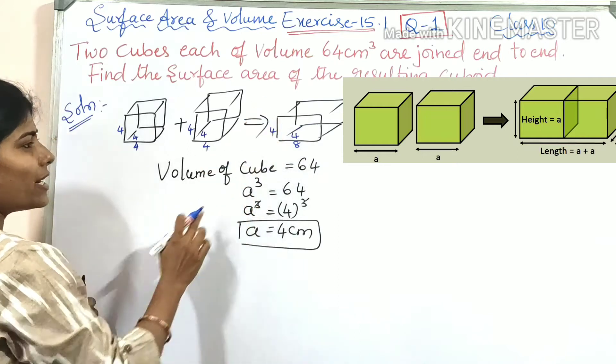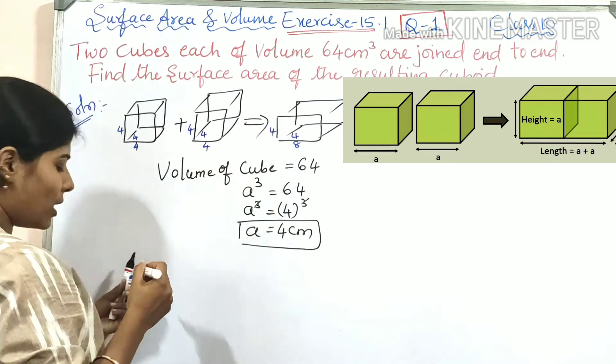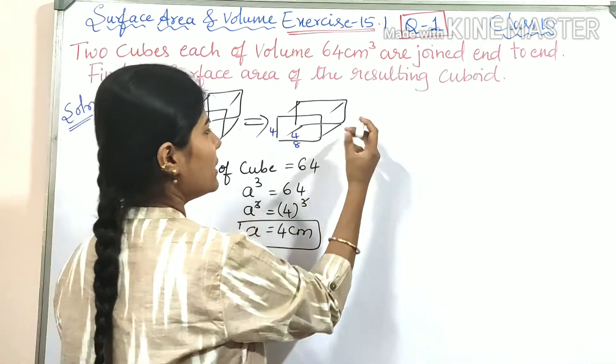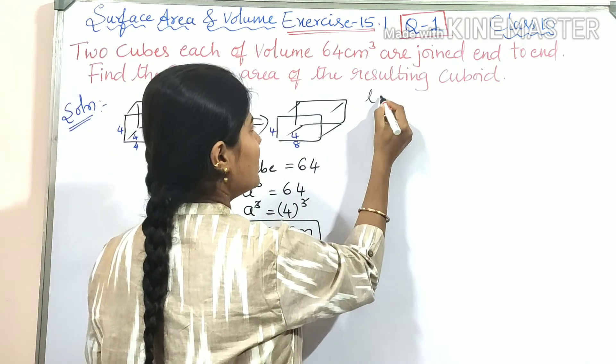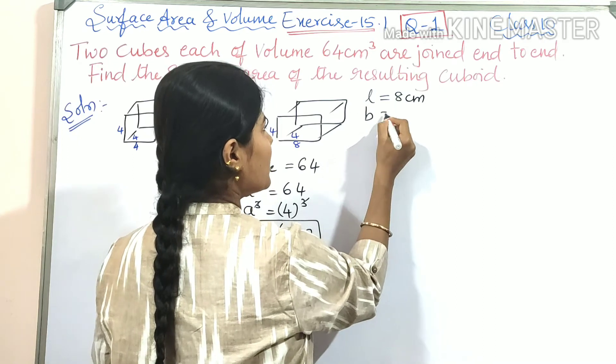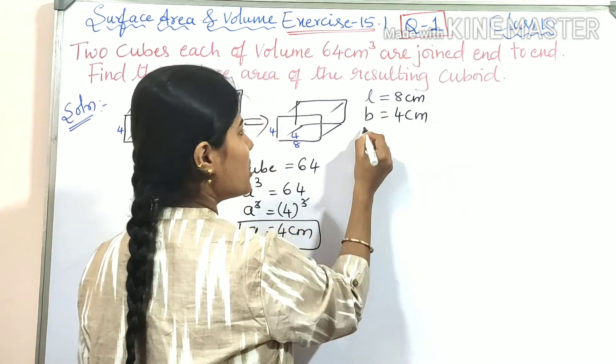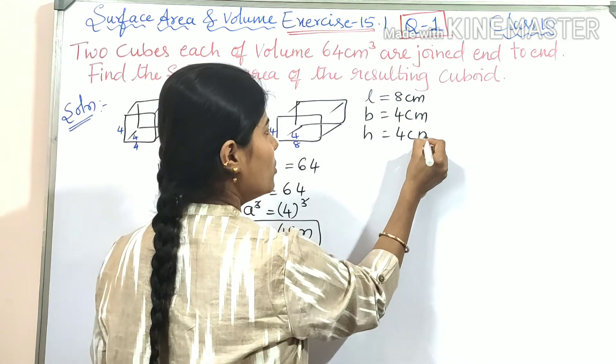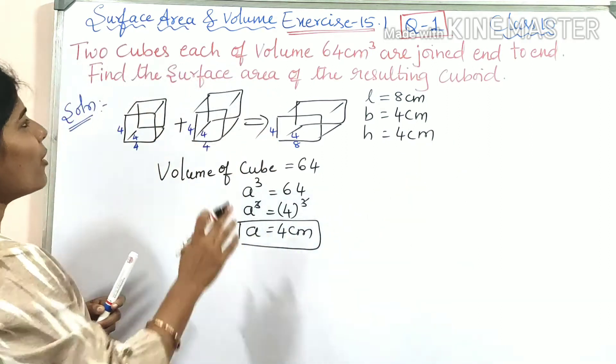So the resultant cuboid dimensions are: length equals 8 centimeter, breadth equals 4 centimeter, height equals 4 centimeter. What we have to find now is the surface area of the resultant cuboid.